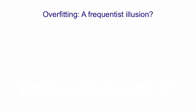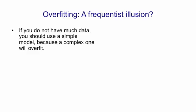But that's basically just a result of not bothering to get the full posterior distribution over the parameters. So a frequentist would say if you don't have much data you should use a simple model. And that's true.